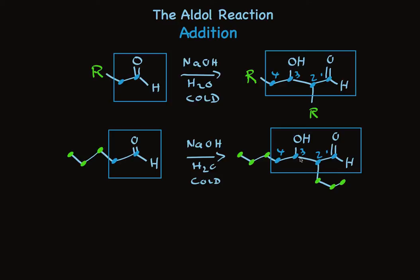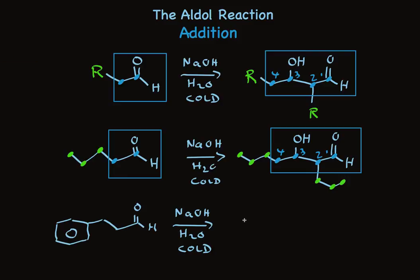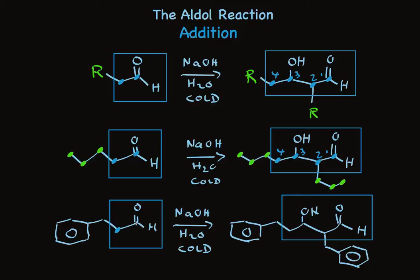So there are two keys to noticing that this is an aldol product. One, that it's a 1,3-hydroxy aldehyde, and two, that on the two and four carbons you have the same thing attached. Here's another example. Treatment of this aldehyde with the same conditions makes this aldehyde product. I'll put the blue boxes around the core carbons in the starting material and product. We'll tag these carbons of the aldehyde starting material, and the four carbons — one, two, three, four — of the aldehyde product. Here's one carbon of the alkyl group that's attached; it's the carbon of a benzyl group, and that benzyl group shows up twice in the product.